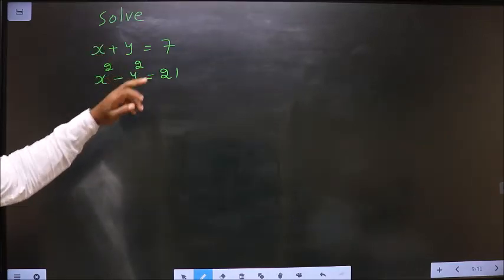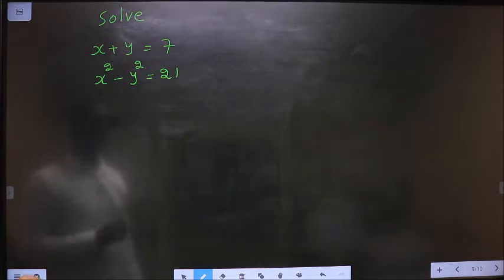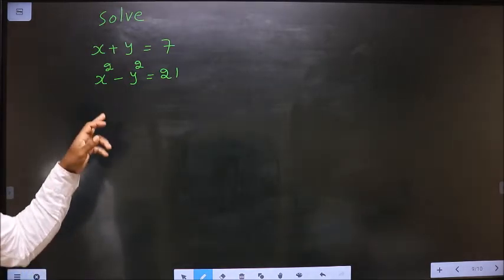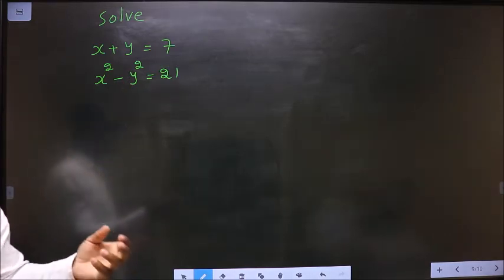Solve x plus y equal to 7 and x square minus y square equal to 21. To solve these equations I cannot use elimination method so I should use substitution method.